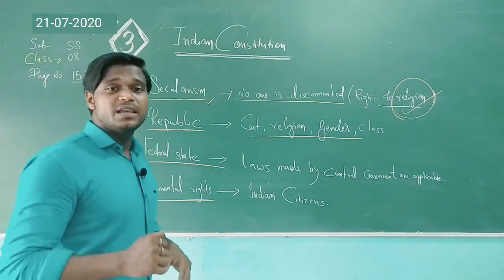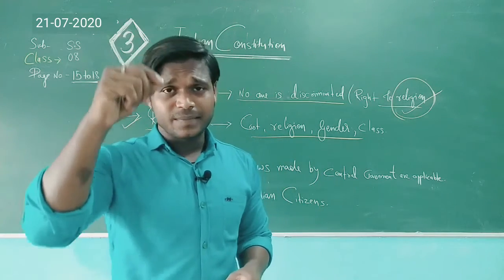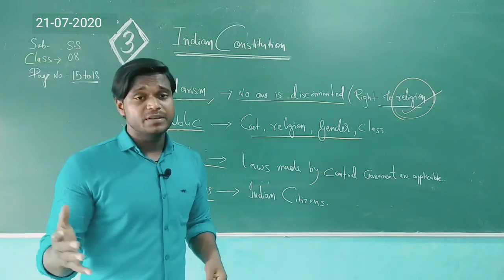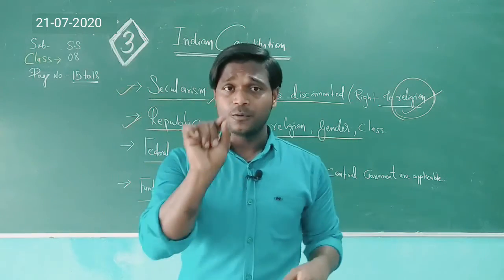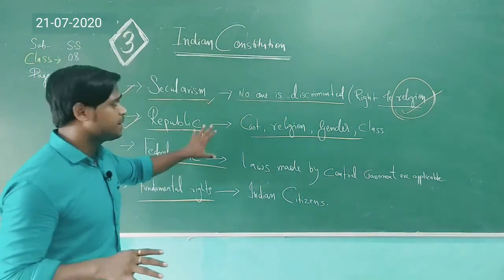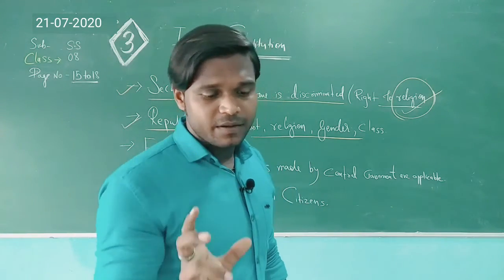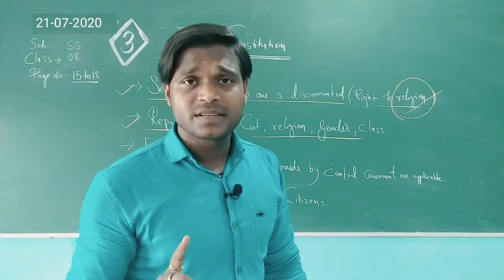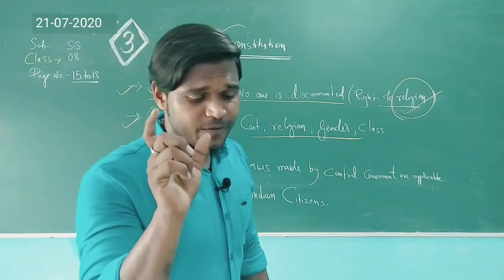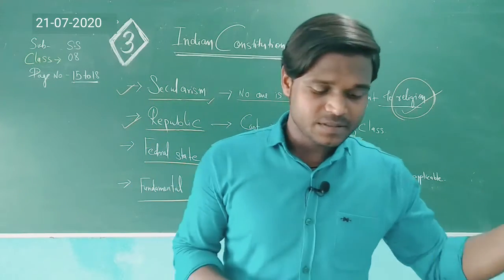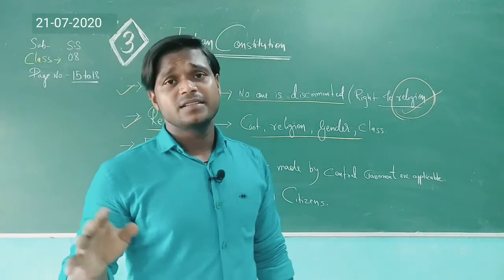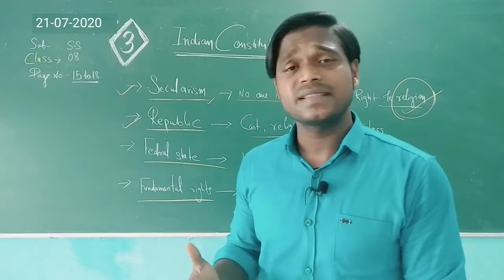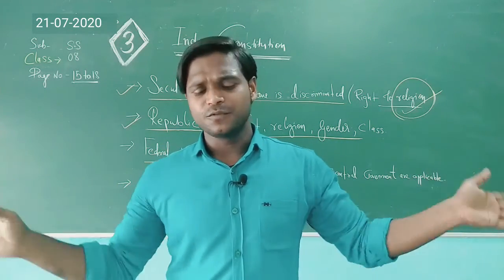On page 16 of your textbook, there is a chart of the central government structure: at the top is the President, with Legislature on the left and Judiciary on the right. Below that is the state government chart, where the Governor is at the top, with Legislature on the left and the High Court (Judiciary) on the right. Please study that chart carefully. These are the theories you need to understand in this lecture.